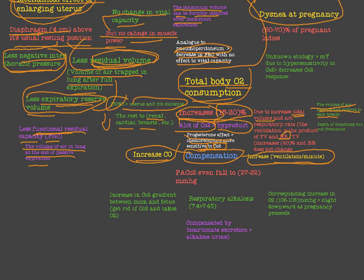In pregnancy, there is no change in respiratory rate, but tidal volume — the depth of breathing — increases. The tidal volume increases by about 40%, which also increases ventilation per minute by about 40%. So the increased ventilation is due to greater depth of breathing, not higher frequency.